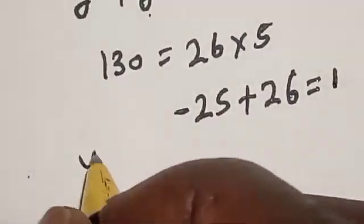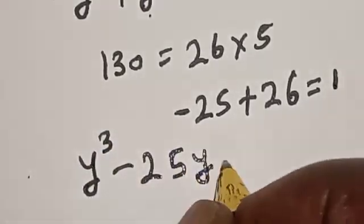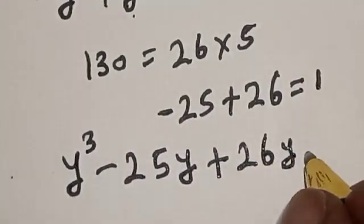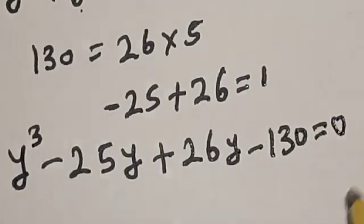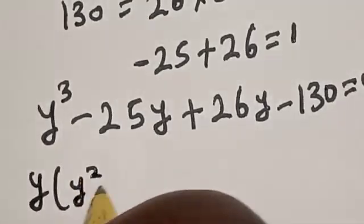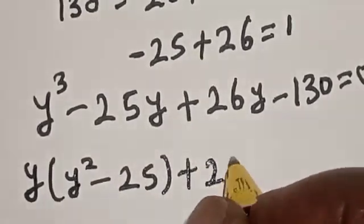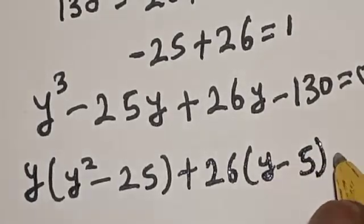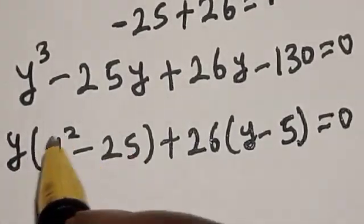So we have y cubed minus 25y plus 26y minus 130 equals 0. Bringing y out of the first group: y times (y squared minus 25) plus 26 times (y minus 5) equals 0.